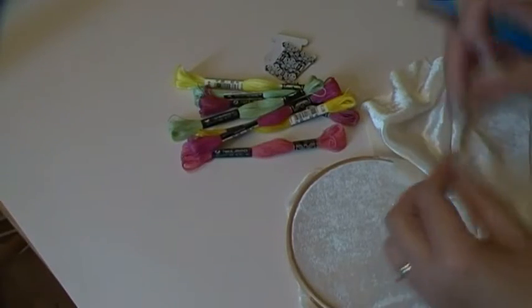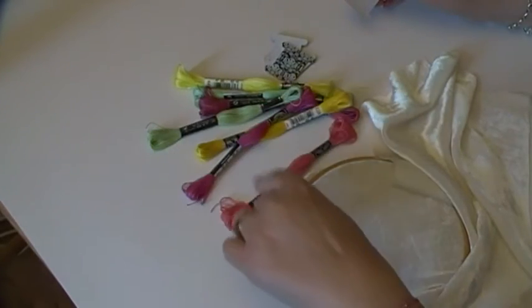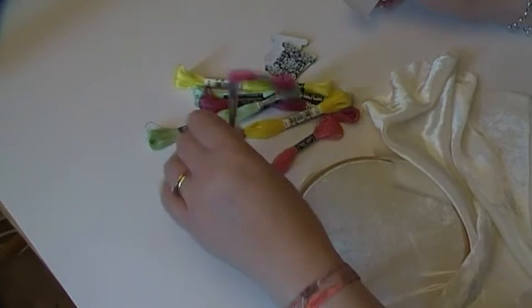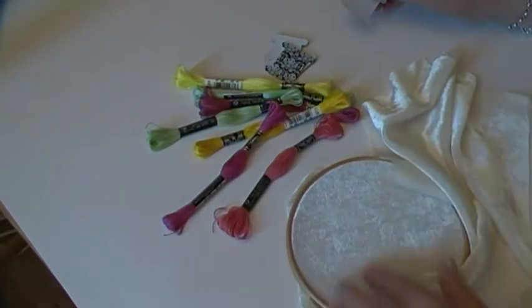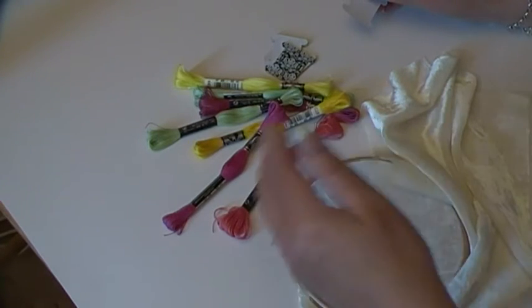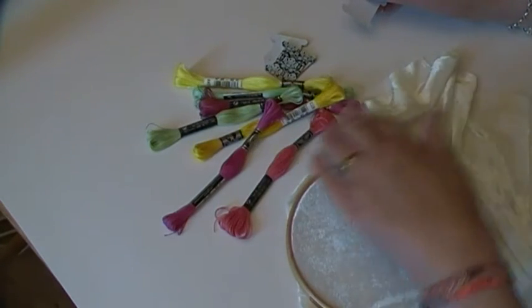Right, hi. I've bought some new threads. This is DMC Cotton Abroader, number 25, and it's quite fine. But I want to do some stitching with it today on here just to try it, to get a sense of it, because I think it's too fine.